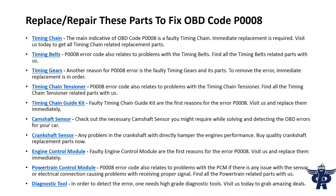Replace or repair these parts to fix OBD code P0008. The timing chain is the main indicator of OBD code P0008; a faulty timing chain requires immediate replacement. Visit us today to get all timing chain related replacement parts.